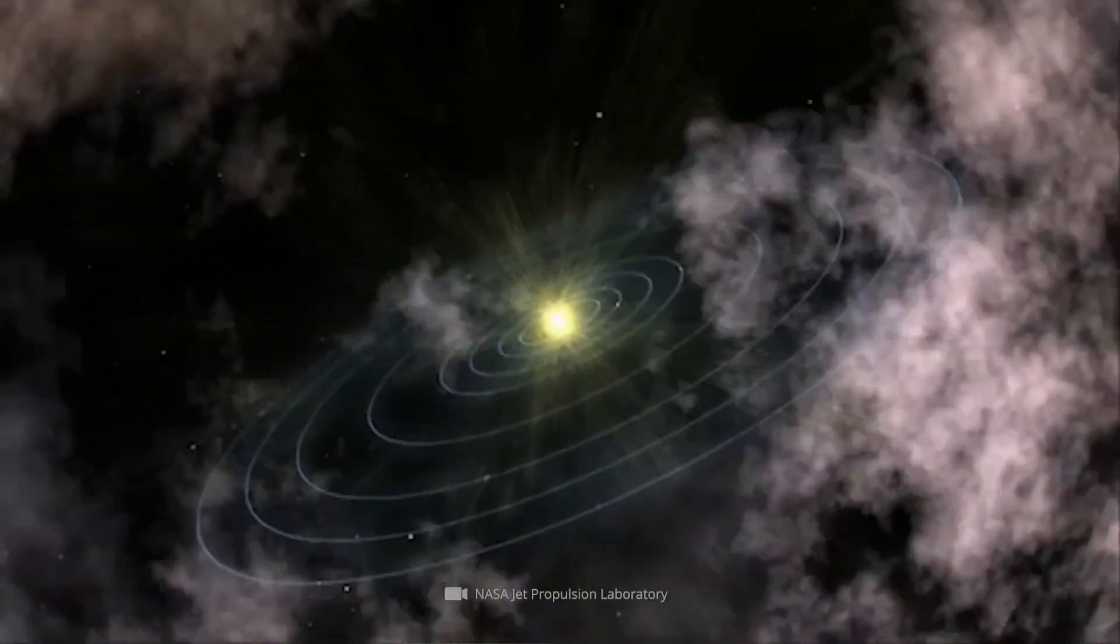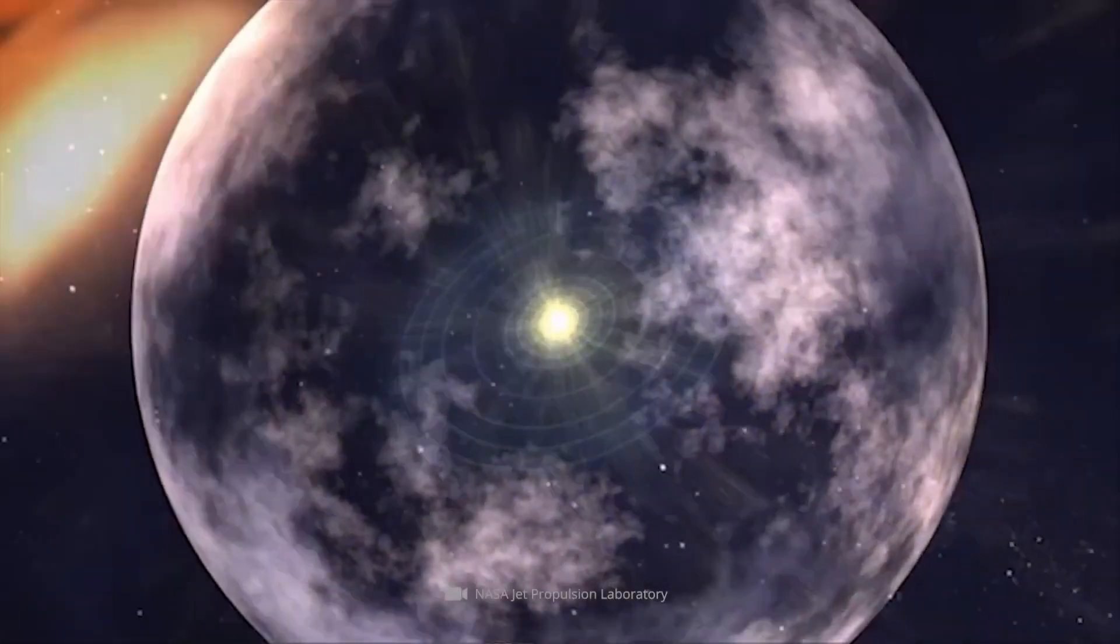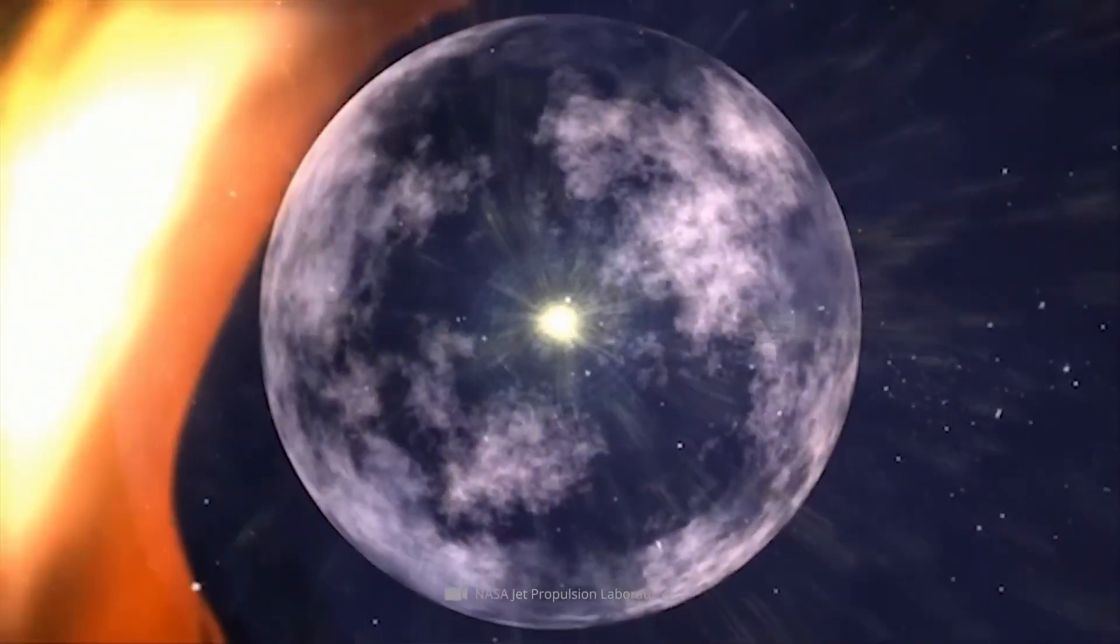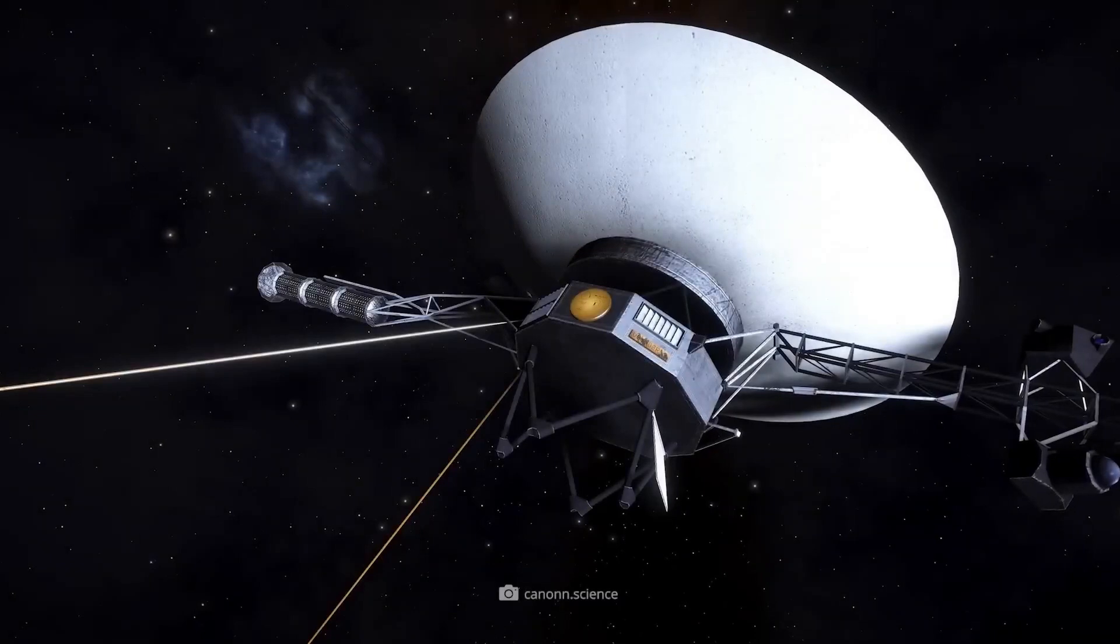As they embarked on their epic journeys, the Voyager spacecraft gave humanity its first detailed, close-up views of Jupiter and Saturn's moons, revealing astonishingly active and dynamic worlds.